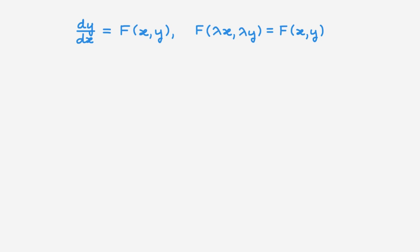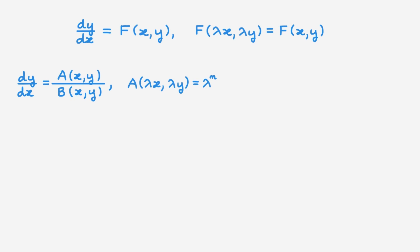A very common alternative is to replace the function f on the right-hand side by a ratio of two functions a and b. In this case, the equation is homogeneous if a is a homogeneous function of some degree n and b is also a homogeneous function of the same degree n. Let me emphasise that a and b must be homogeneous functions of the same degree n, and you should convince yourself that this alternative form is entirely equivalent to the form we've been using.